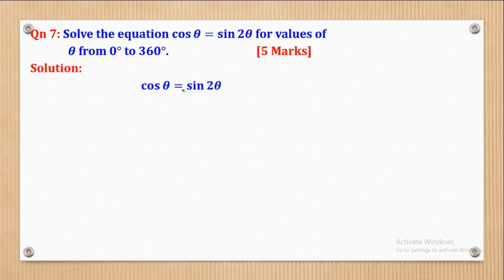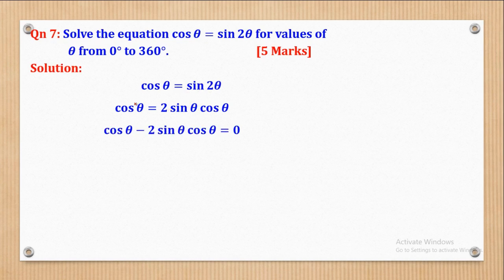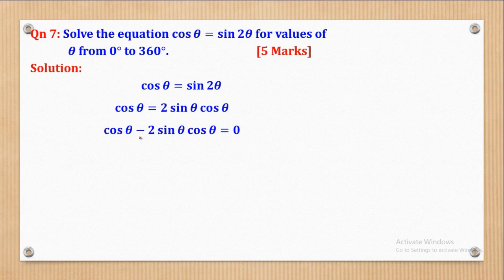The equation given is cos θ = sin 2θ. First, recall the double-angle identity: sin 2θ = 2 sin θ cos θ. Substituting gives cos θ = 2 sin θ cos θ. A common mistake is to cancel cos θ from both sides, which loses solutions. Instead, bring everything to one side and factorize: cos θ(1 − 2 sin θ) = 0.